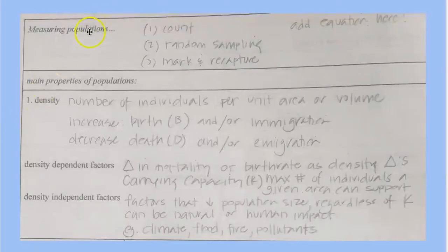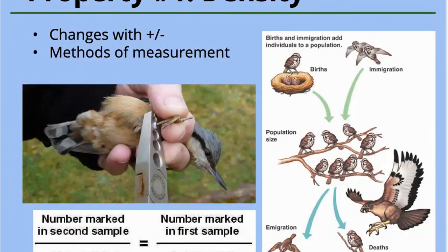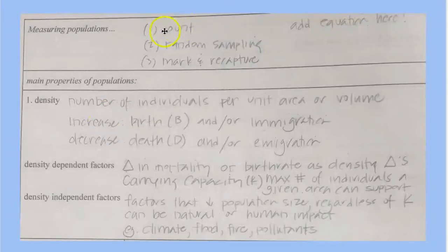So let's go here in your notes and let's think about, let's talk a little bit about how we might measure populations. So you can measure populations by simply counting the number of organisms of a particular species.